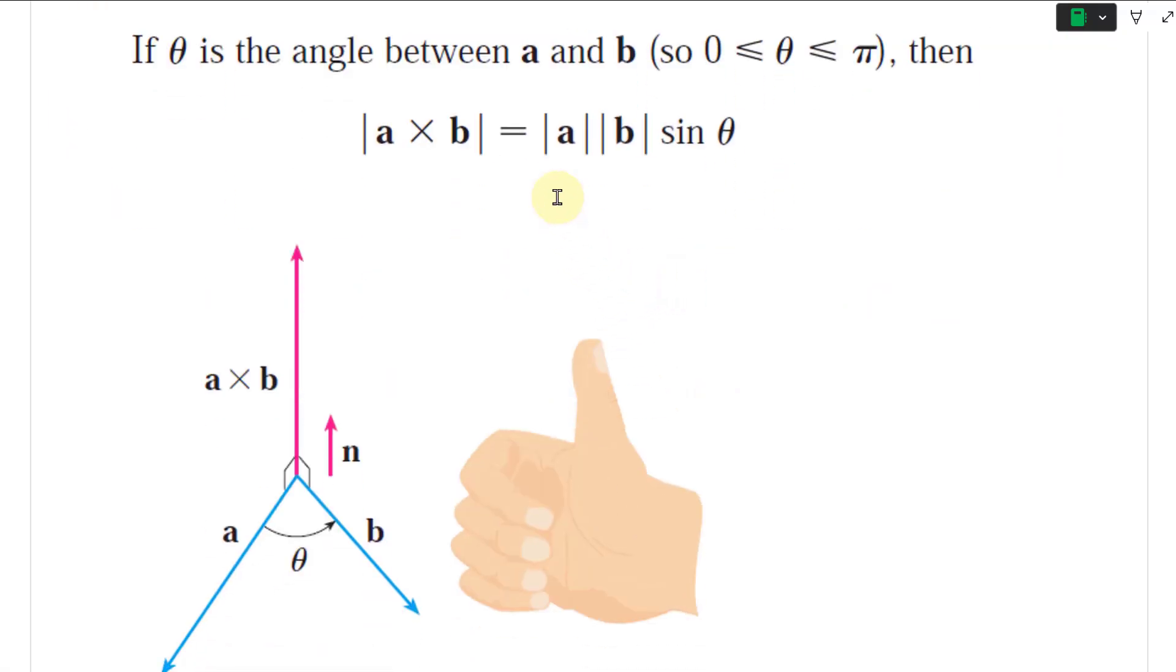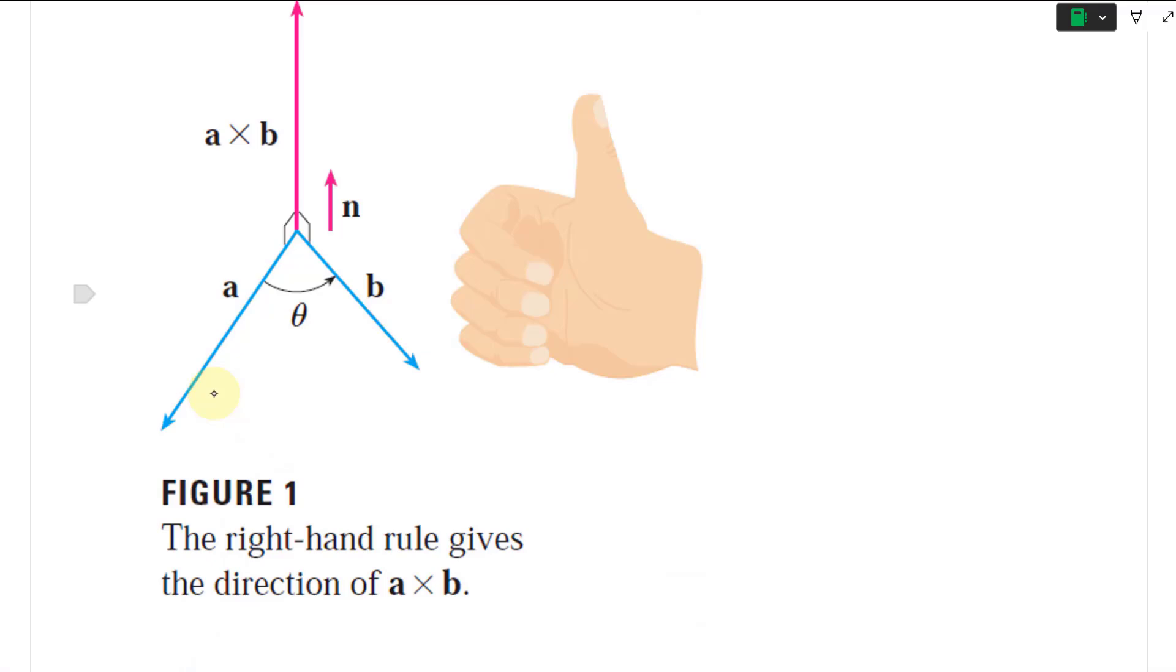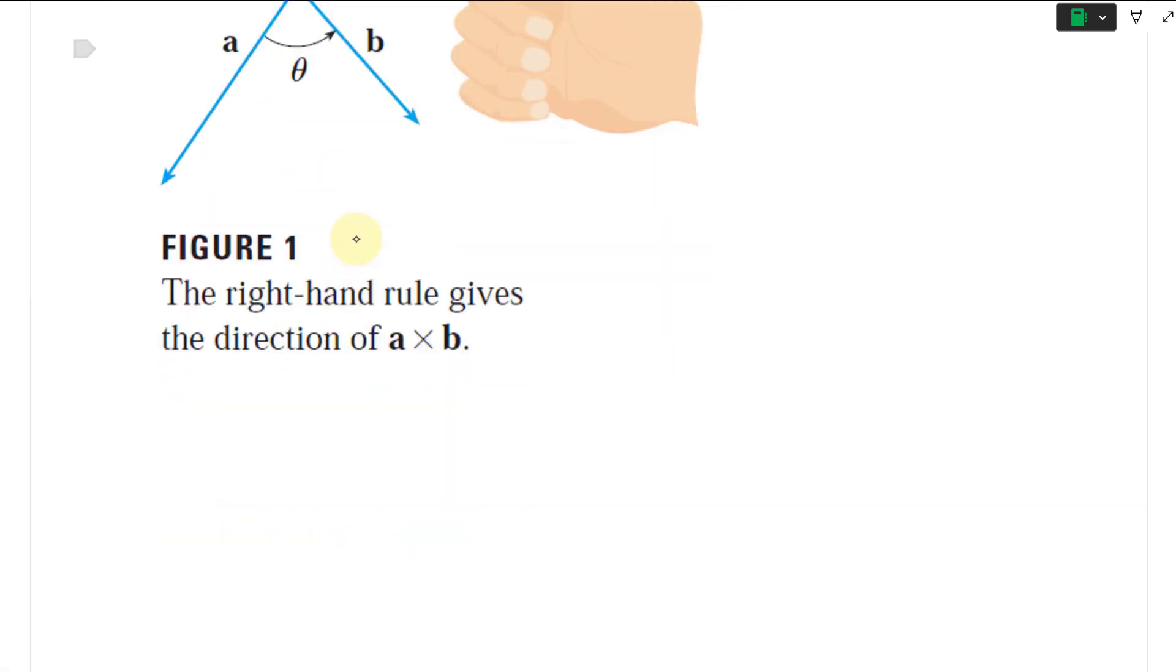And using the right hand rule for the direction, this is going to be perpendicular to these right here. But if it's zero, if these are parallel, if B is on this, it's going to be zero, or the zero vector. So the magnitude is zero, has no direction.